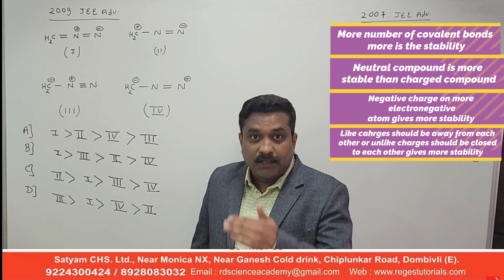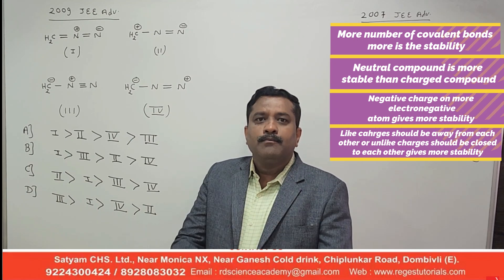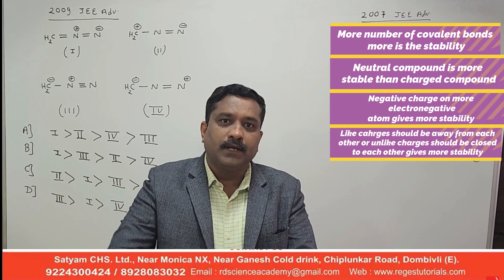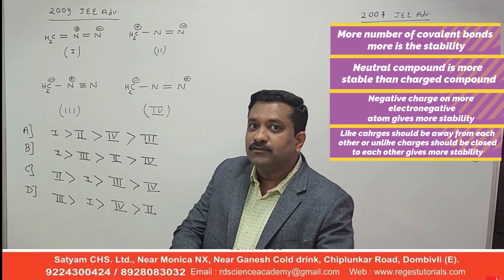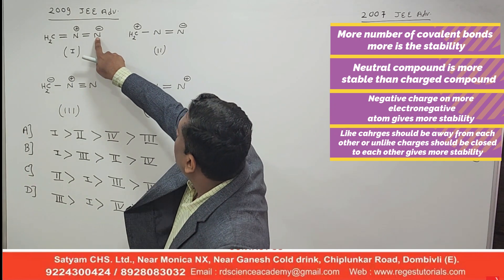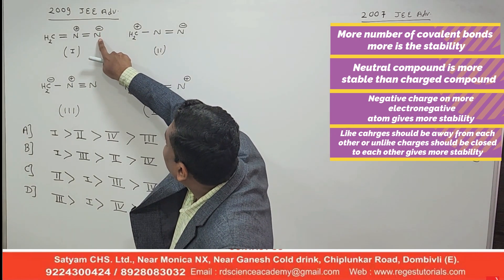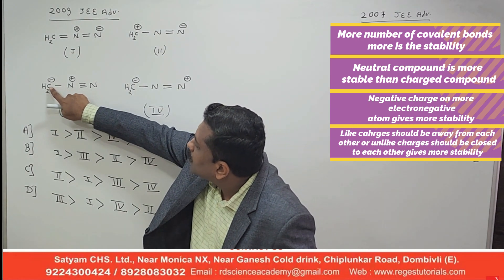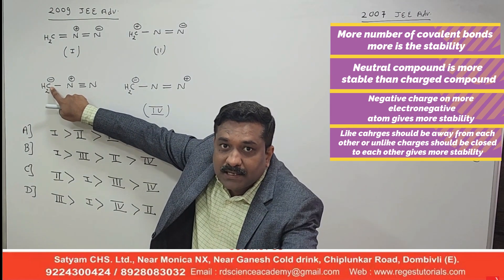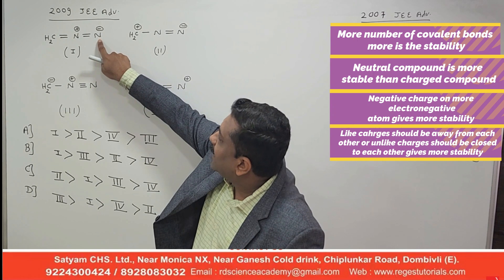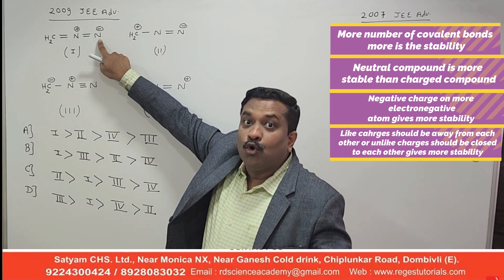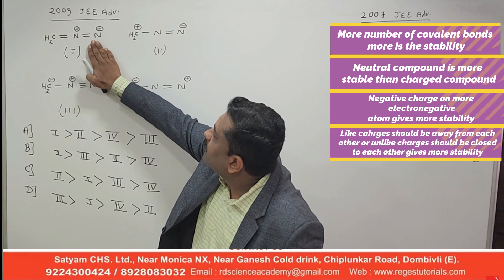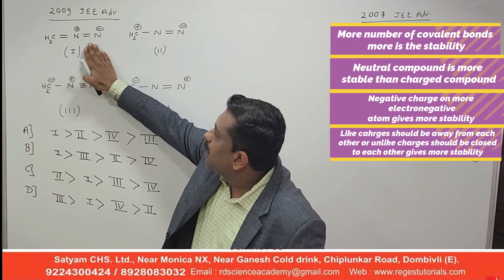We activate Rule 3: the more electronegative element should carry the negative charge to gain stability. In Structure 1, the negative charge is on nitrogen; in Structure 3, the negative charge is on carbon. Since nitrogen is more electronegative than carbon, Structure 1 is more stable compared to Structure 3.